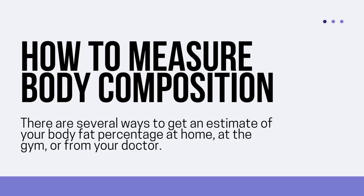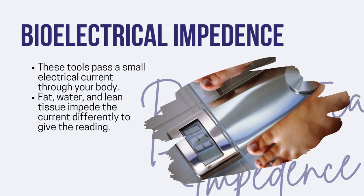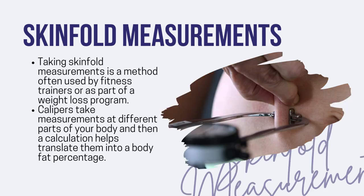How to measure body composition: there are several ways to get an estimate of your body fat percentage at home, at the gym, or even from your doctor. The first is bioelectrical impedance — these tools pass a small electric current through your body, and fat, water, and lean tissue impede the current differently to give a reading. This is how it looks like. We also have skin fold measurement, which is a method often used by fitness trainers or as part of a weight loss program. Calipers take measurements at different parts of your body and a calculation translates them into a body fat percentage.